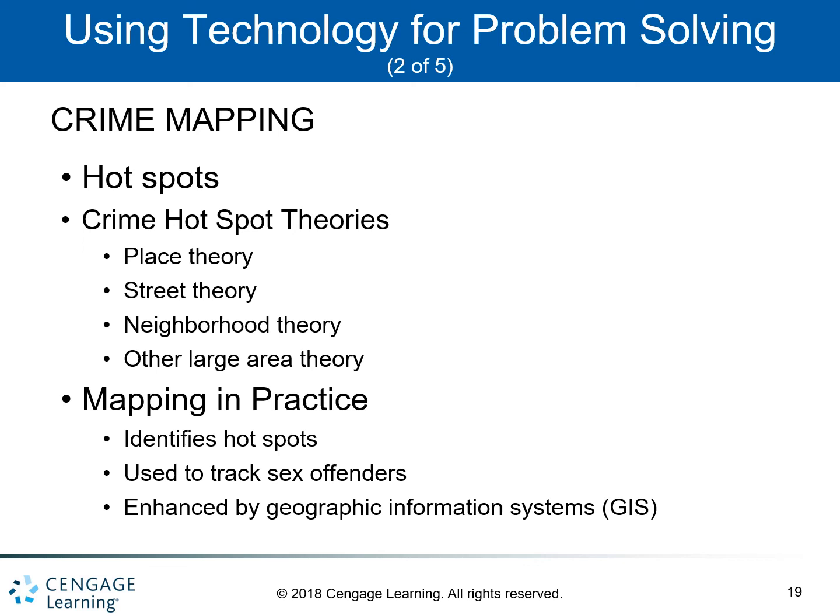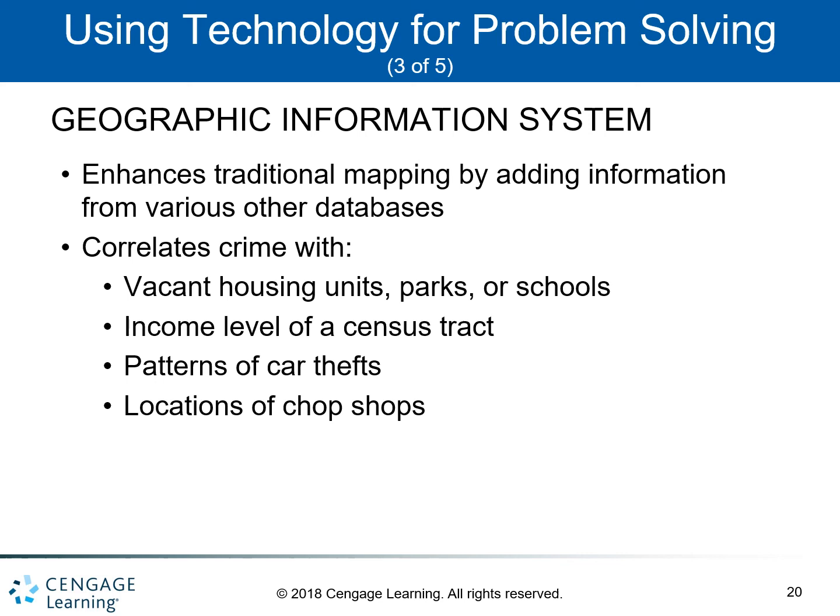As far as mapping in practice, it identifies hotspots and is used to track sex offenders, and is enhanced by geographic information systems and GPS systems. Geographic information systems enhance traditional mapping by adding information from various other databases.